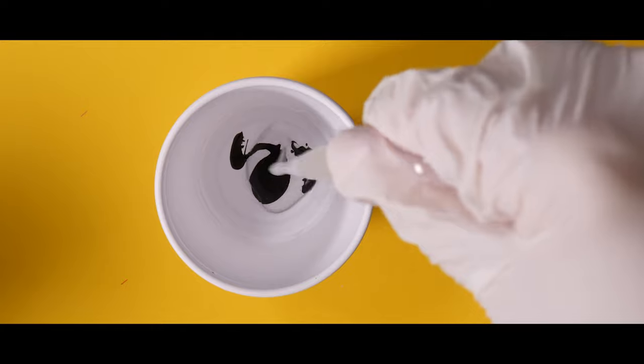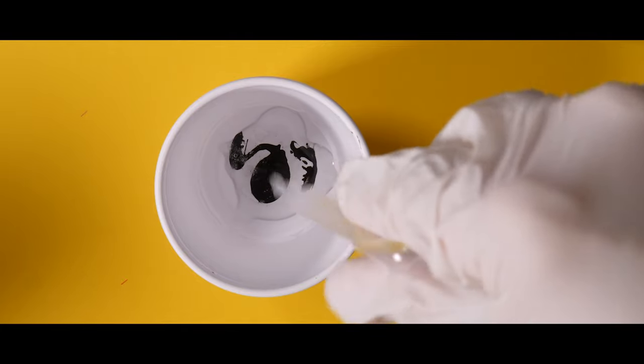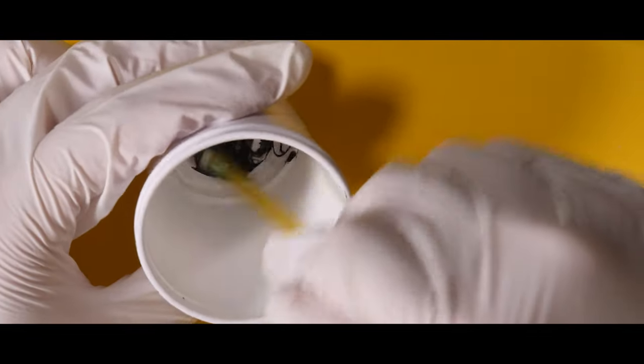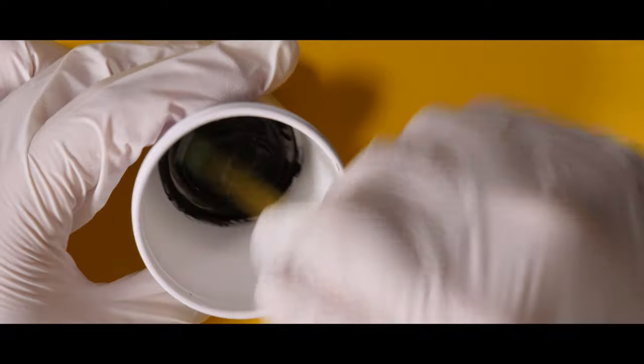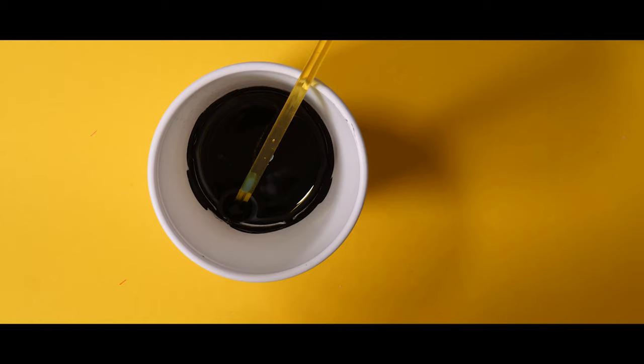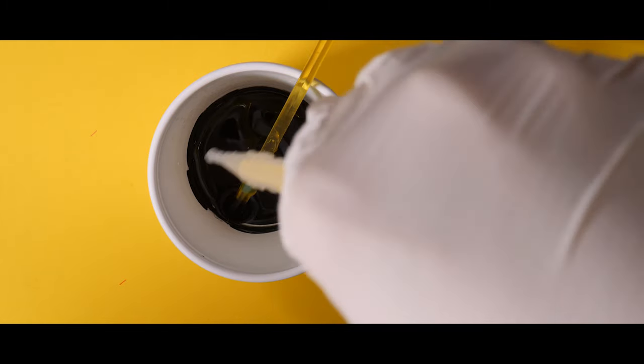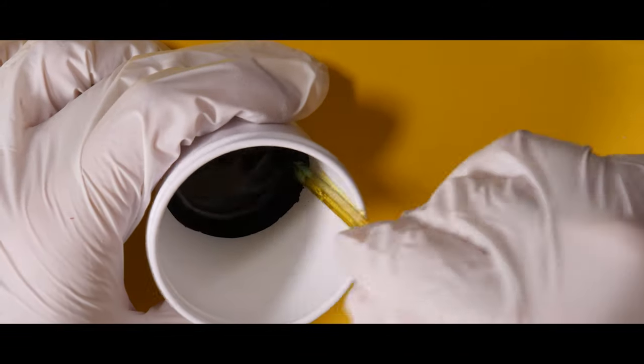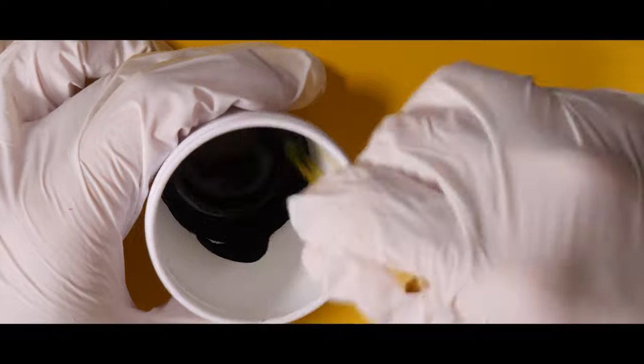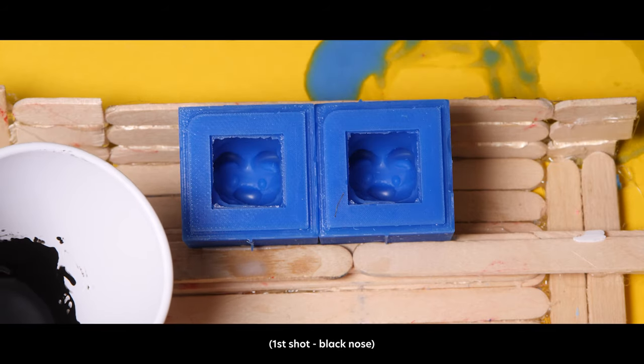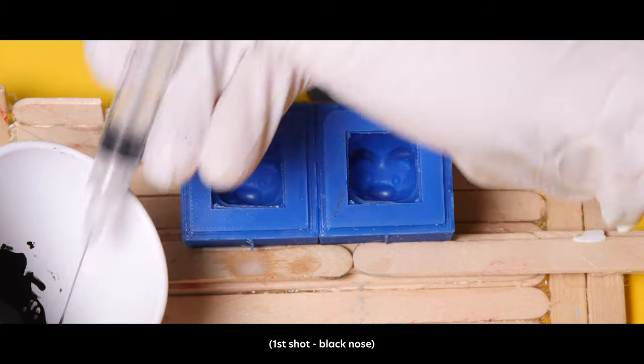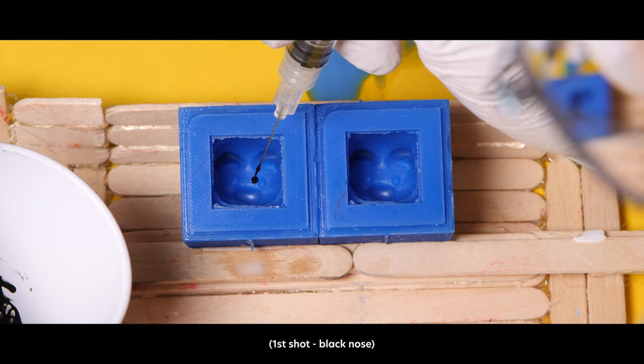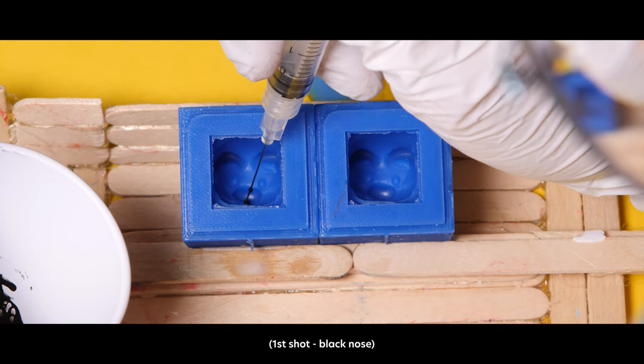Here I'm starting on the first shot, which is the black nose. I know a lot of makers use toothpicks to slowly drop in resin, but I find it easier to use a really thin gauge syringe because it gives me more precision.